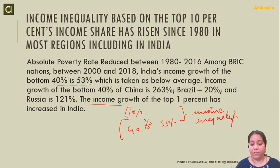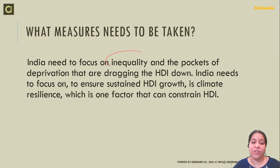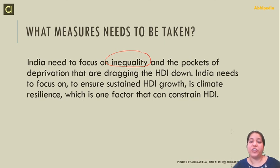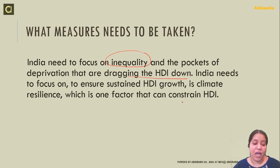The measures that need to be taken include focusing on inequality — both income inequality and gender inequality. We are performing better on life expectancy and school dropout indicators, but we need to reduce the pockets of deprivation that are dragging the HDI down. India needs to ensure sustainable human development growth along with climate resilience, which is a key factor constraining the Human Development Index. I hope this helped you understand this topic in depth. Please like, share, and subscribe to our channel. Thank you.